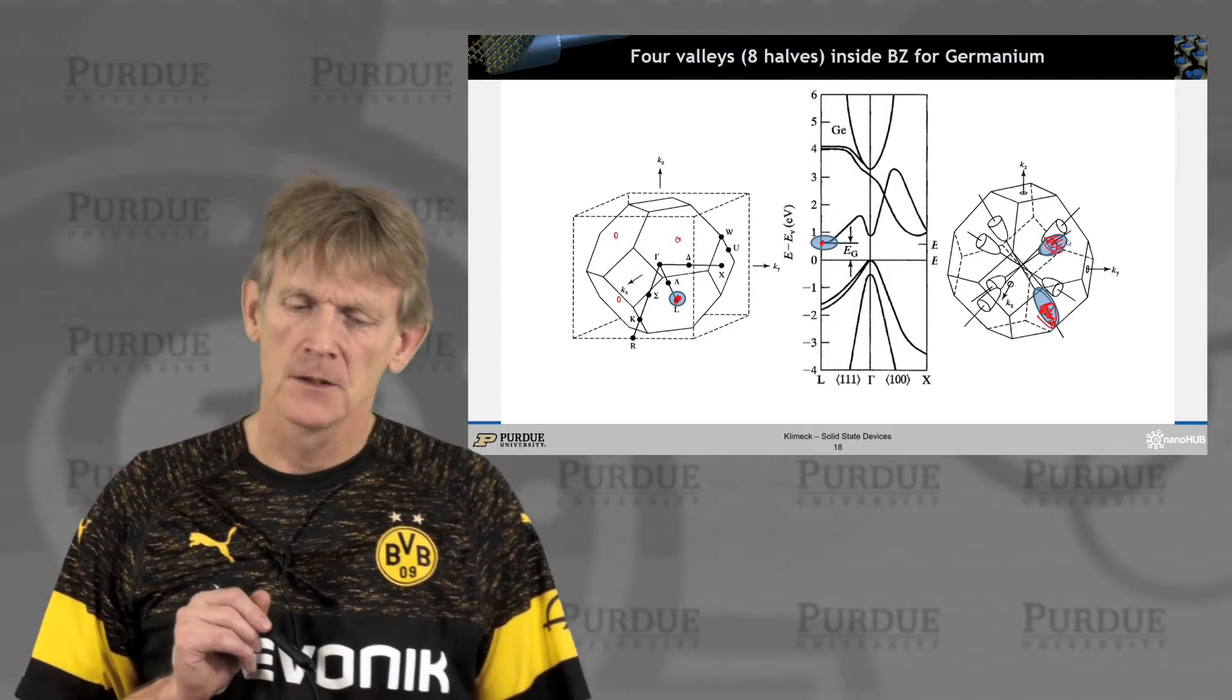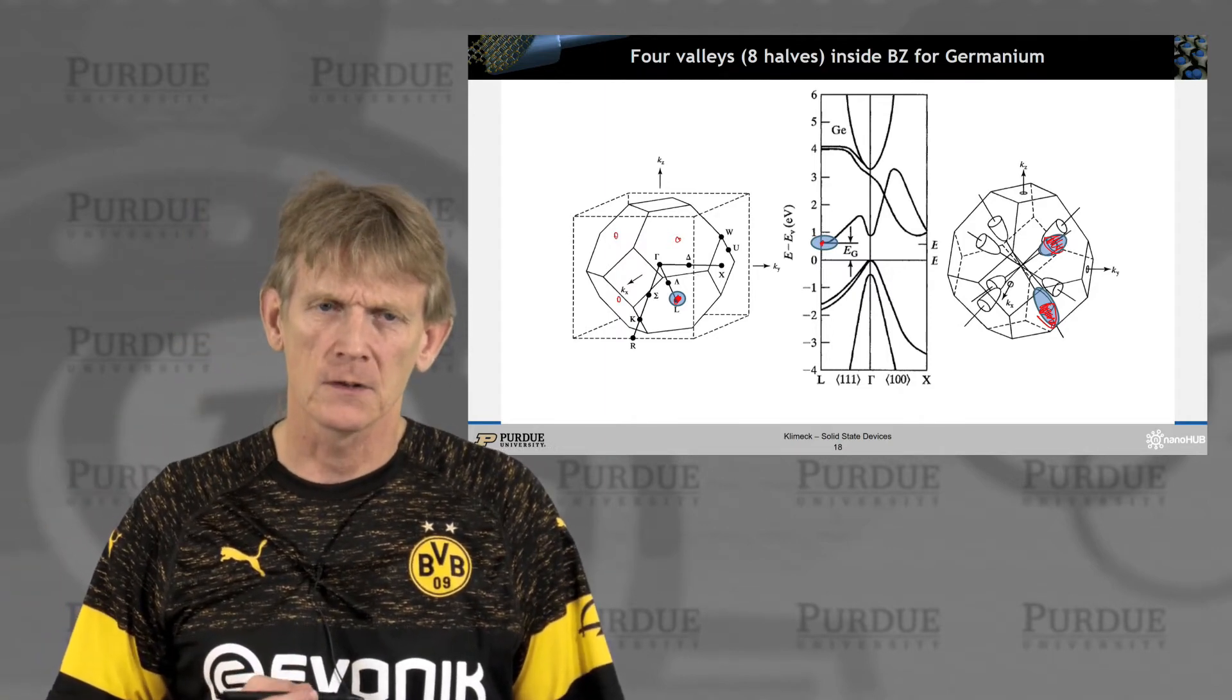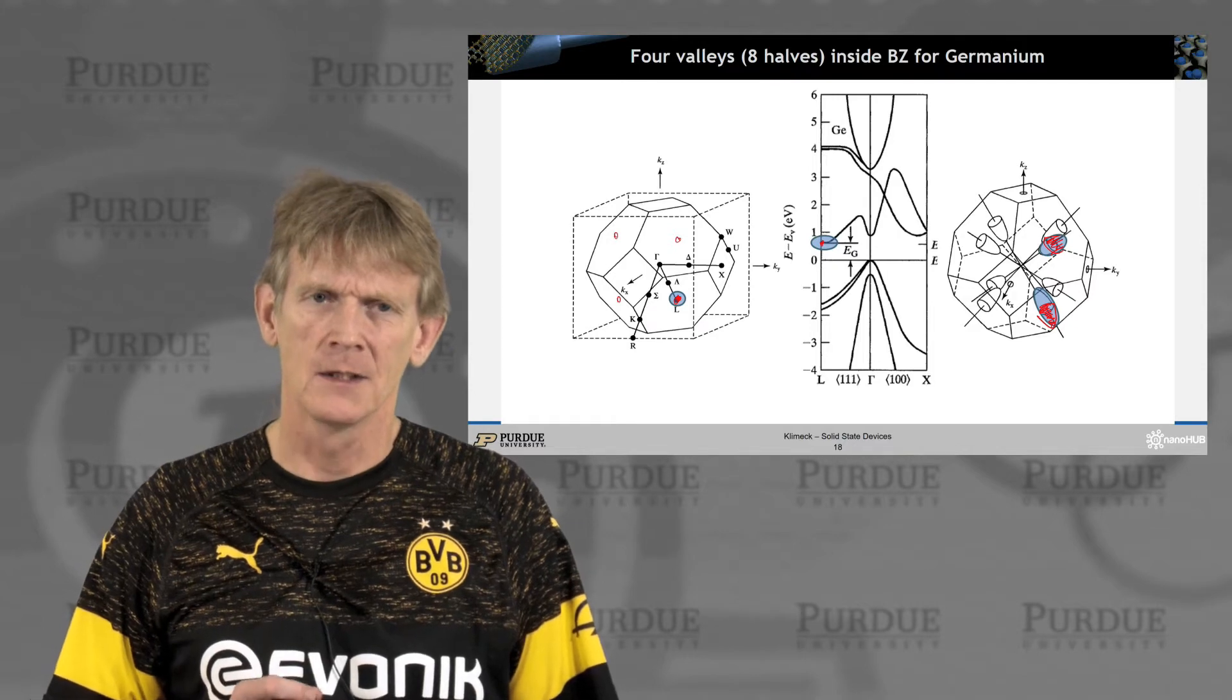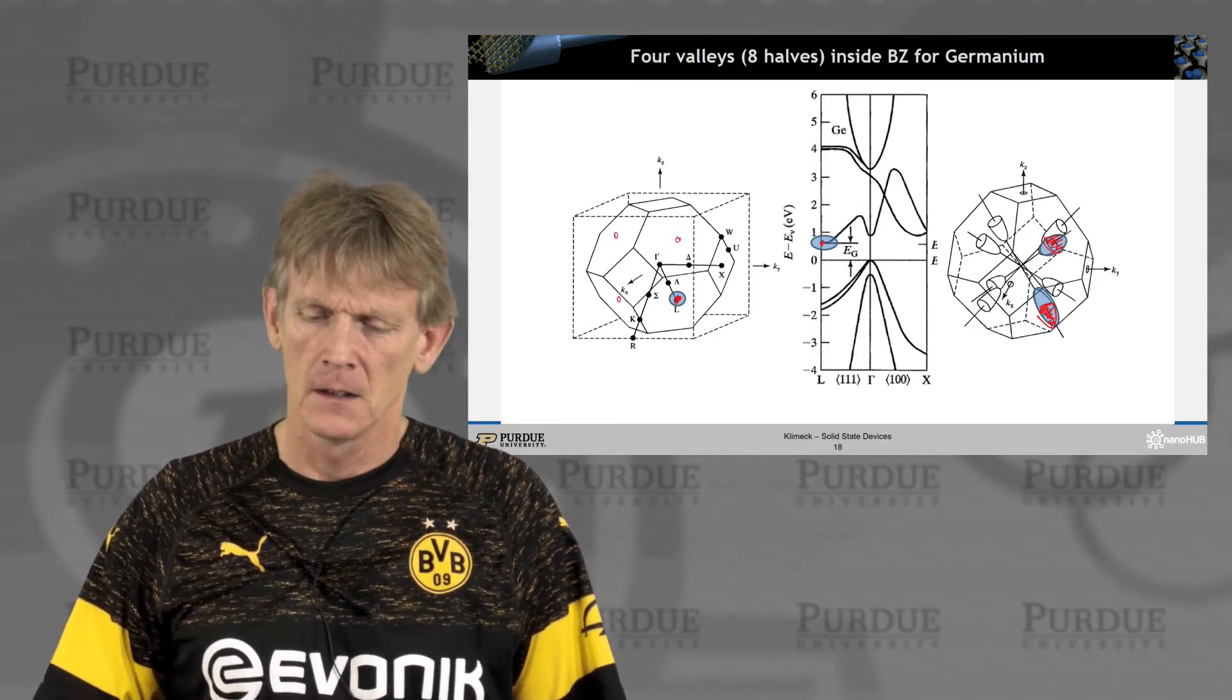So you could say we have eight of those ellipsoids, but only half of those are inside the Brillouin zone. The other states are repeated effectively.